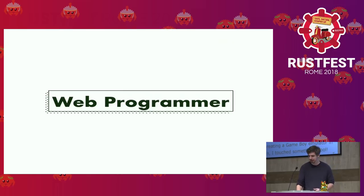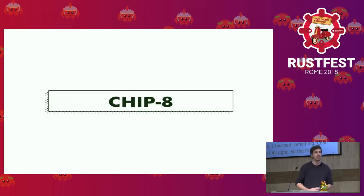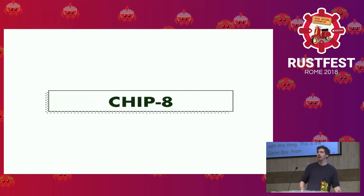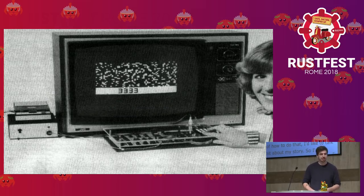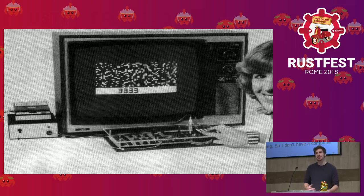I encourage all of you to take a look at emulation because it's a lot of fun, and at the end you get to play games, which is pretty cool. When I started on my journey I was looking for what to emulate. I thought maybe I'd start with a Nintendo 64 or a PlayStation, but those are kind of hard. So let's start a little simpler. I started with the Chip 8 — a computer from the 1970s, very simple. You can play things like Pong and Breakout. If the Game Boy seems like a big leap, I'd suggest starting with the Chip 8 first.